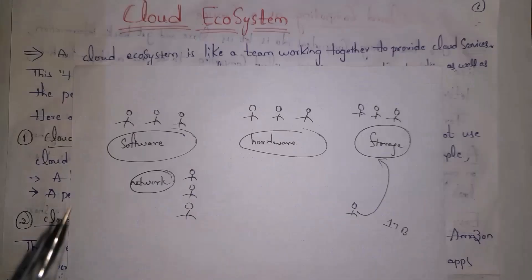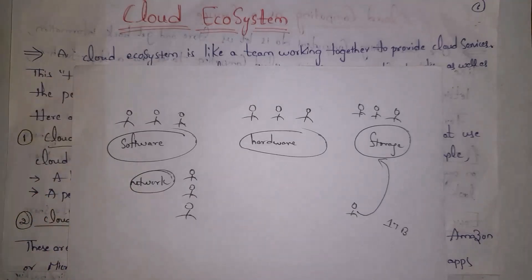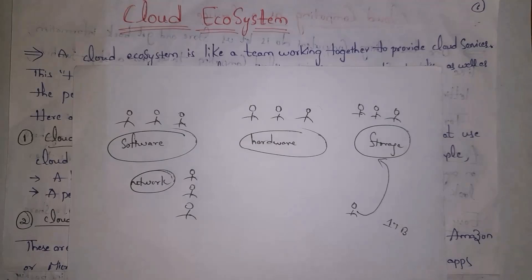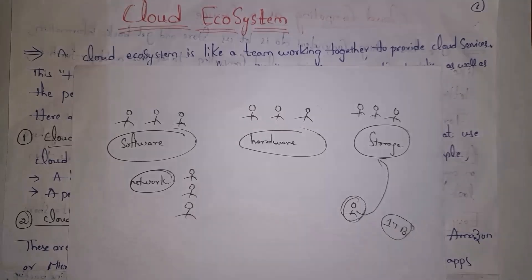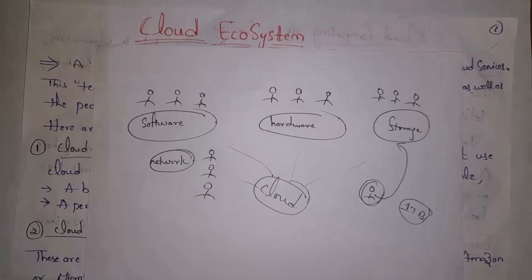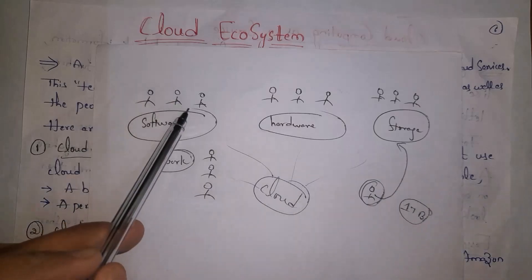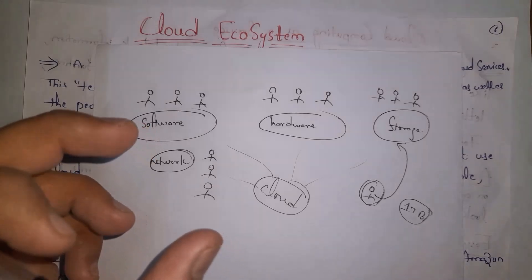In the cloud there are various kinds of employees — some handle software, some handle hardware, some handle storage, and some handle networks. For example, if you as a cloud user request one terabyte of storage, it is the storage team's responsibility to provide it. Not only employees, but various kinds of companies are also involved in the cloud — they invest money and take profits. Software, hardware, storage, network employees, and companies together form what we call the cloud ecosystem, and because of this team we get cloud services.